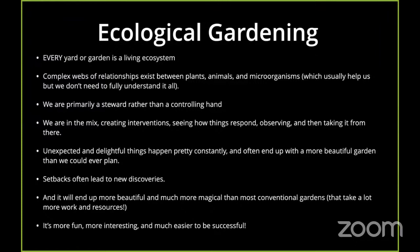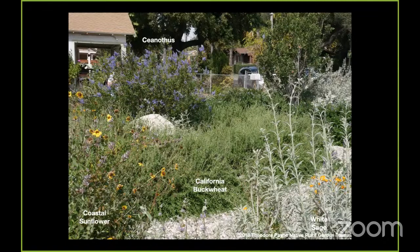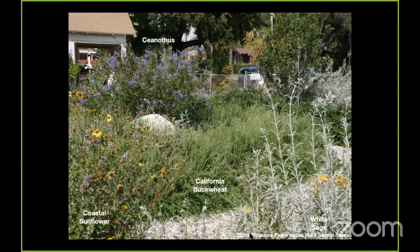Wildlife gardening does all of this while intentionally providing food, cover, and water for wildlife. It helps provide permanent homes as well as connectivity and corridors for many species. Here's a front yard garden I visited and photographed on the Theodore Payne Foundation's Native Plant Garden Tour, which they have every spring. For any of you in Southern California, Theodore Payne Foundation is a nonprofit focused on native plant conservation significantly through urban gardening. They have a nursery and do all sorts of educational programs. This year, because of the pandemic, their garden tour is all online, so for those a little bit farther out, it makes it easier to join in.